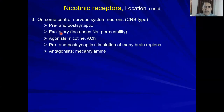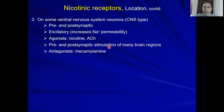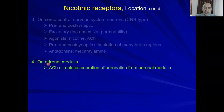The third subtype is the CNS type. It can be pre- or post-synaptic and is excitatory. Agonists include nicotine and acetylcholine. Functions include pre- and post-synaptic stimulation of many brain regions. Antagonist example is mecamylamine. The last subtype is expressed on the adrenal medulla, where acetylcholine binds to nicotinic receptors to stimulate the secretion of adrenaline.